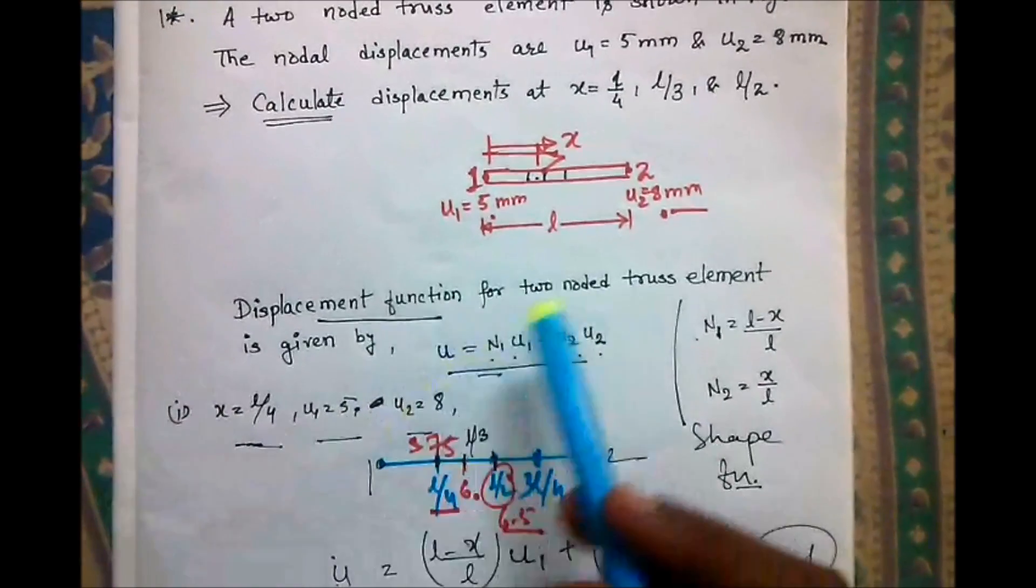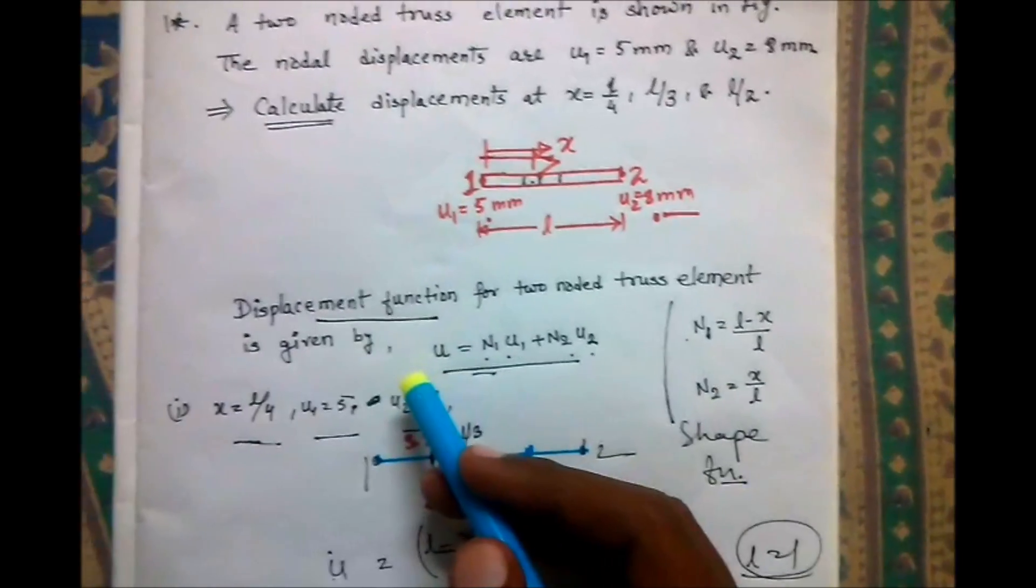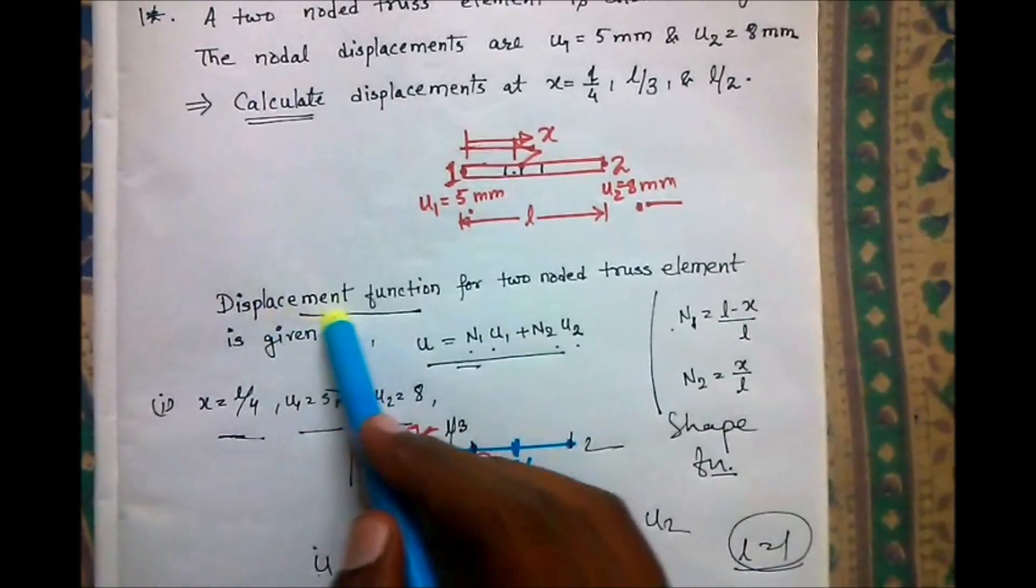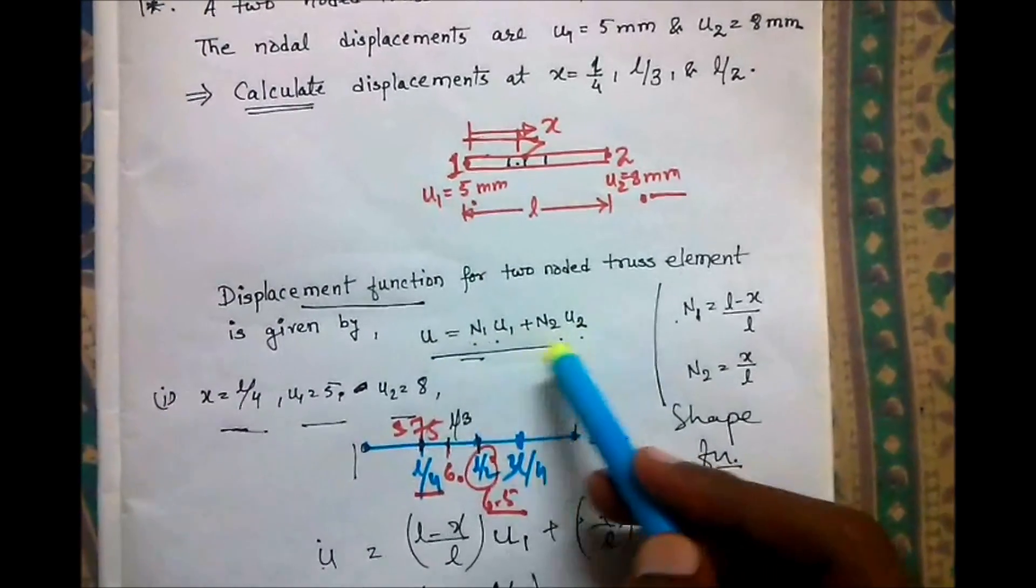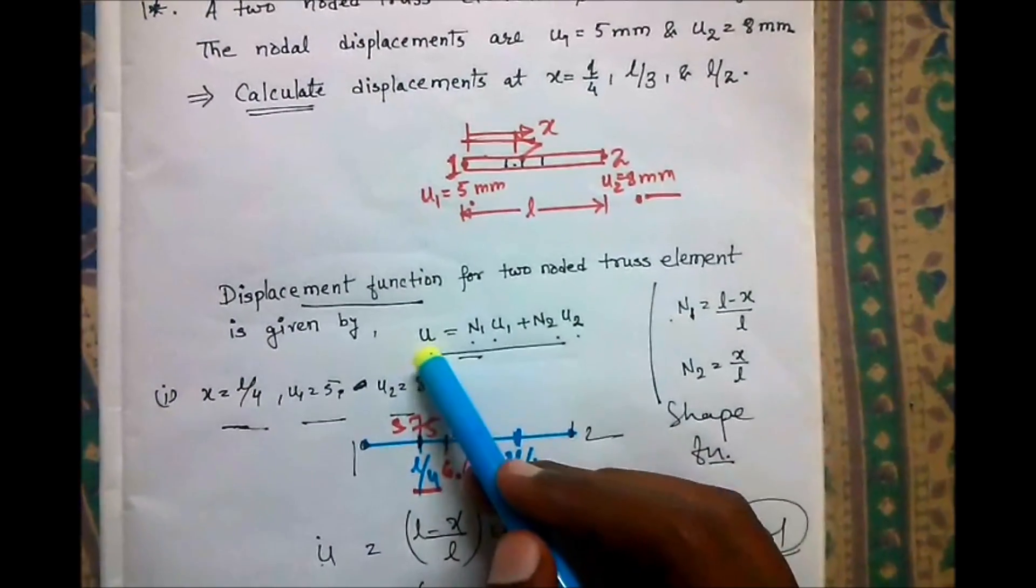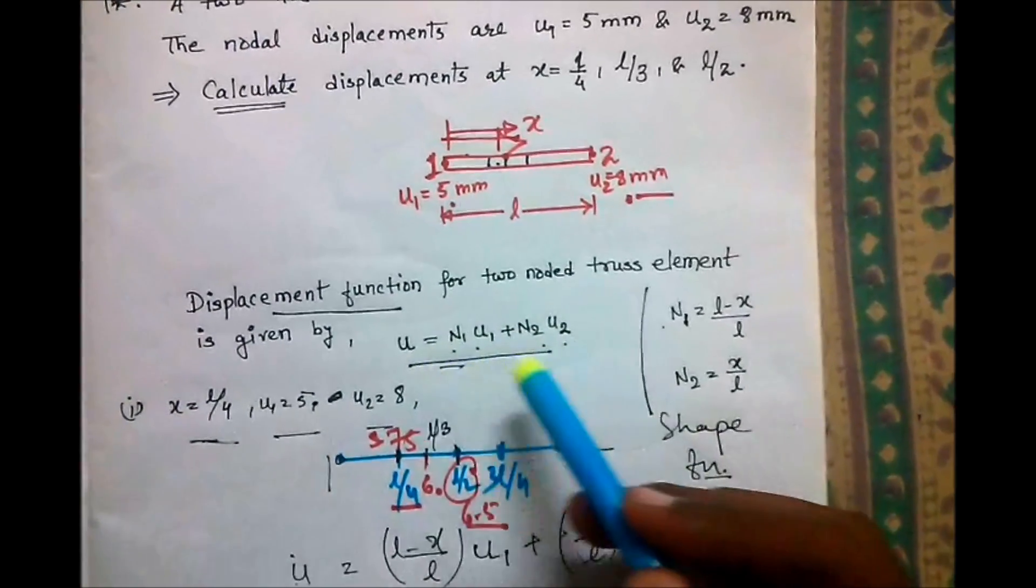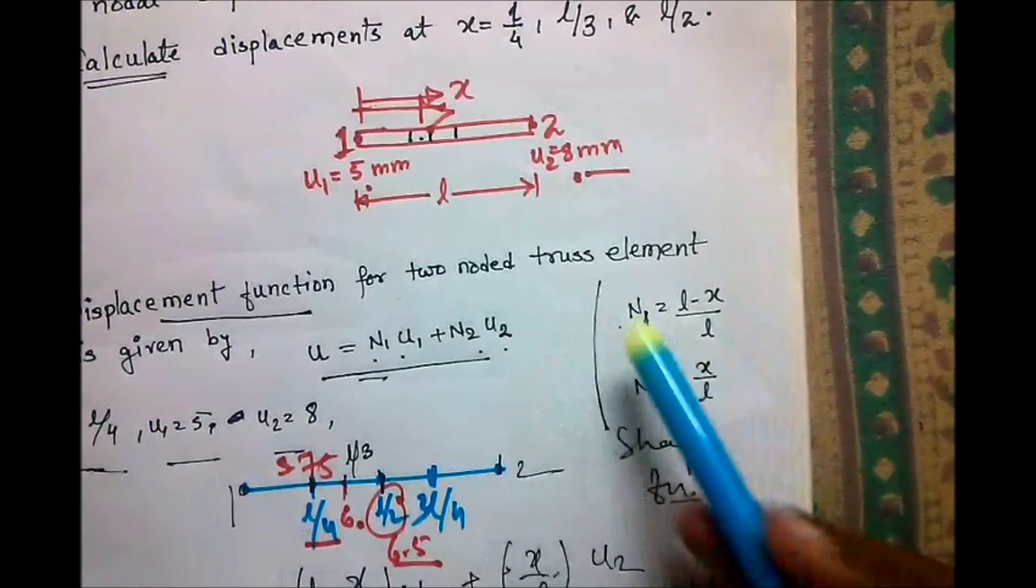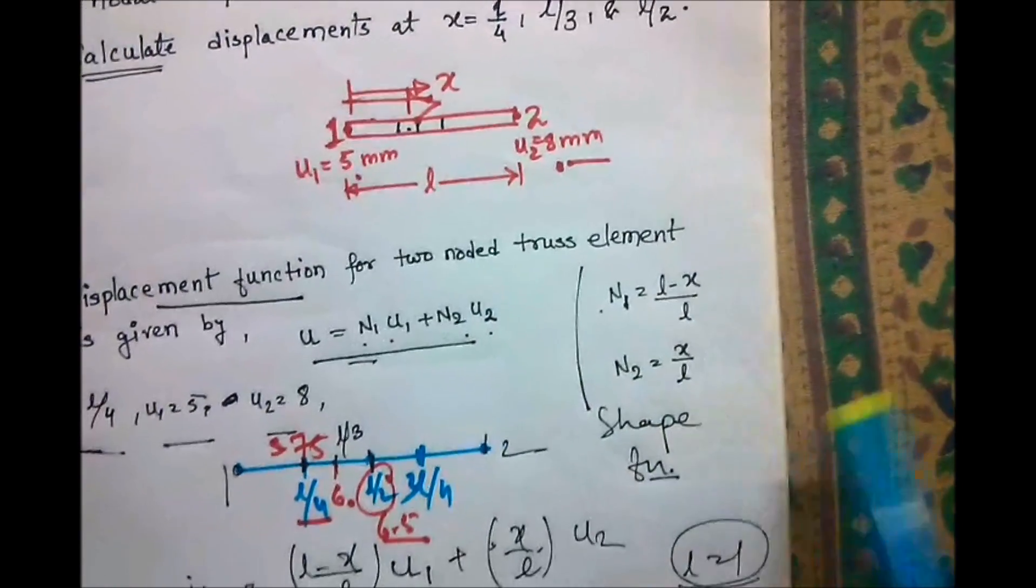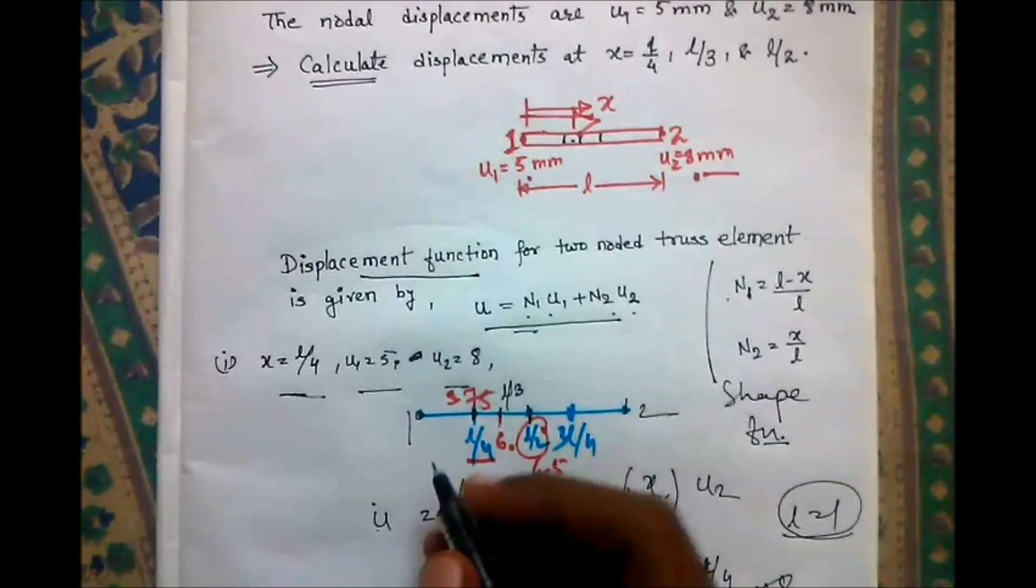To solve this problem, you should have basic fundamental information like the displacement function. It is given as u = N₁u₁ + N₂u₂, where N₁ = (l-x)/l and N₂ = x/l, which are the shape functions. You should have a rough idea about this.